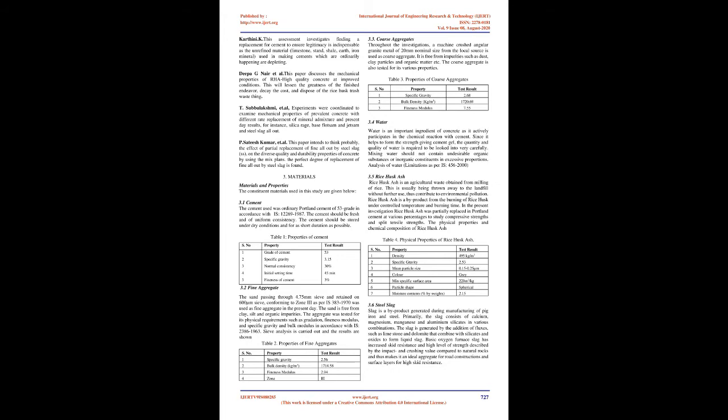2. Literature Review: Mohamed Shoab Ismail and A.M. Waliuddin — in this paper, High Quality Concrete (HSC) was produced using locally available material. The effect of rice husk ash (RHA) passing at 200 mm and 325 mm sieves as a 10–30% replacement of cement on the properties of HSC was analyzed.